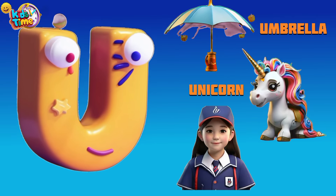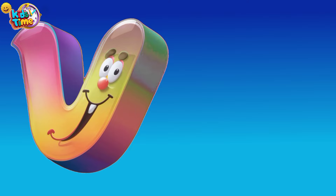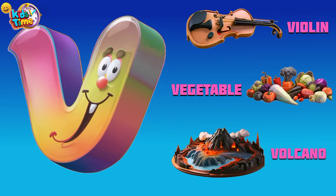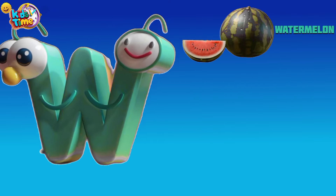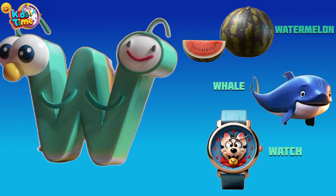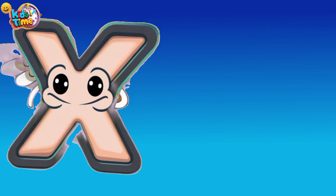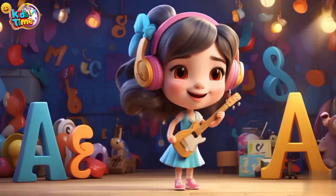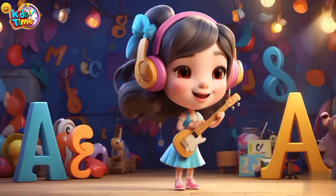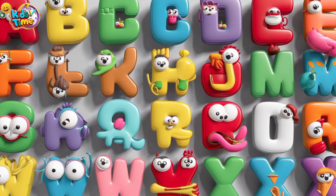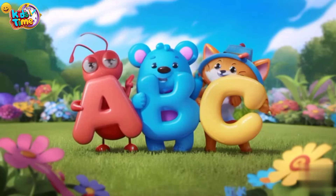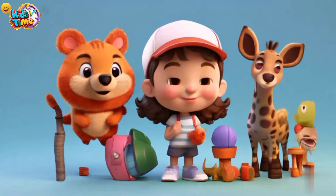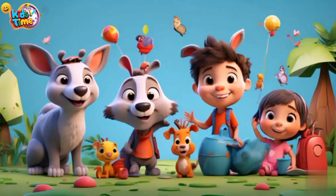U is for Umbrella, Unicorn and Uniform. V is for Violin, Vegetables and Volcano. W is for Watermelon, Whale and Watch. X is for Xylophone, X-Ray and Fox.